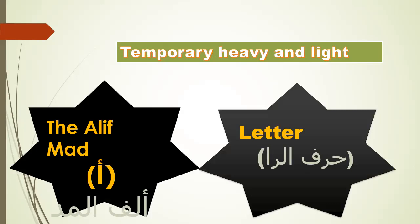The second type is alif mad. For example: qaala — now it is heavy, qaala. And maa — now it is light, maa.